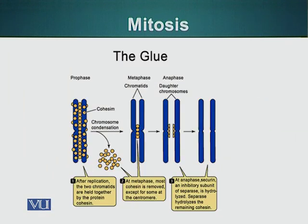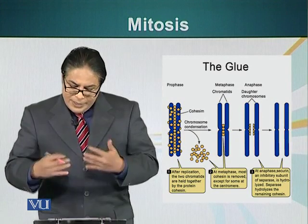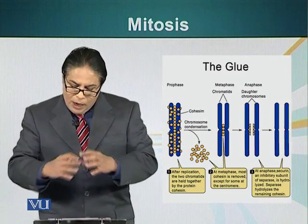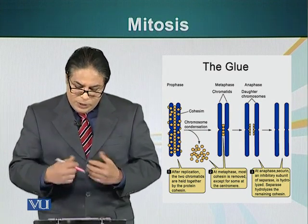The glue molecule mentioned earlier is called cohesin. During prophase, cohesin is holding both chromatids together along their entire length. At metaphase, all cohesin has been degraded except what is left at the centromere or kinetochore region. At anaphase, even the cohesin molecules at the centromere region are degraded, resulting in separation of the two daughter chromatids, allowing the formation of two nuclei in telophase.